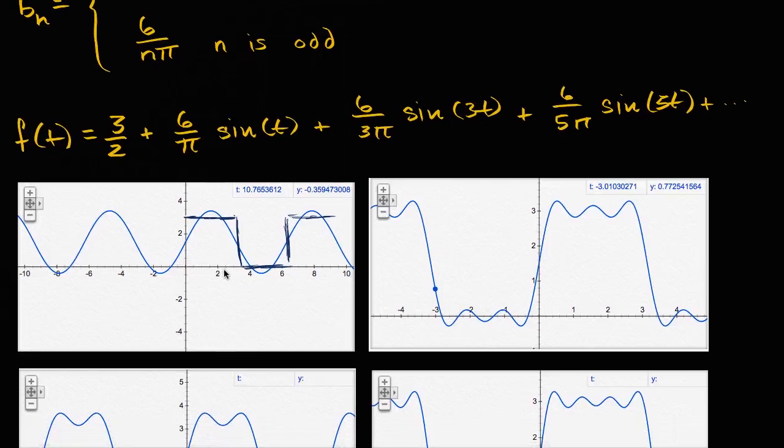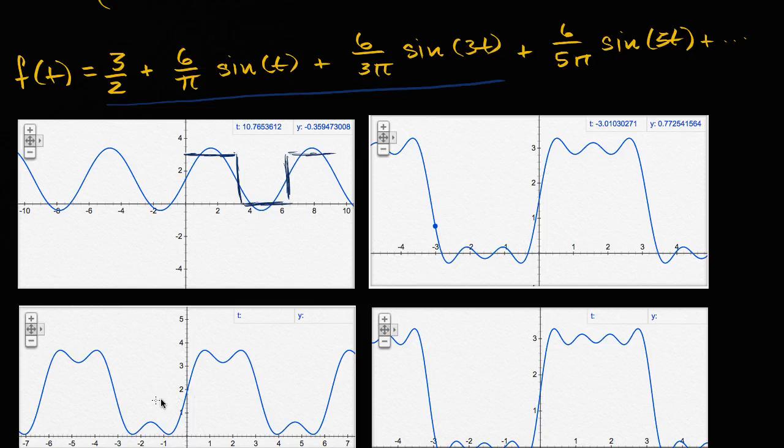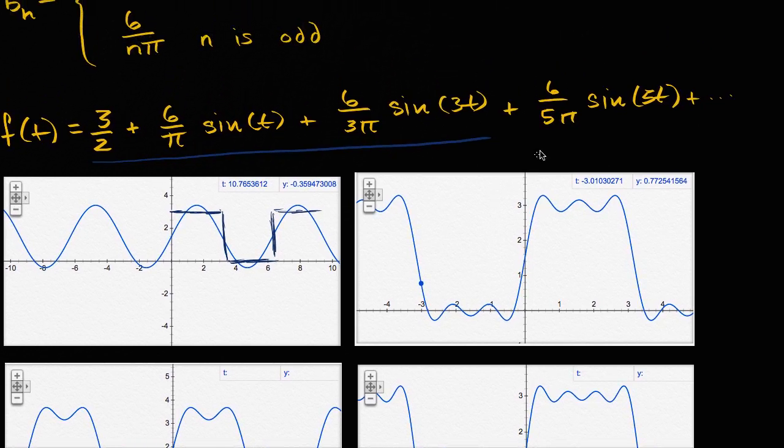But then as soon as you get to three terms, if you add the six over 3π sine of 3t to the first two terms, that's looking a lot more like a square wave. And then if you add the next term, it looks even more like a square wave.